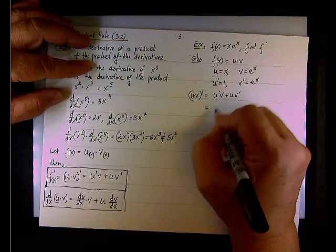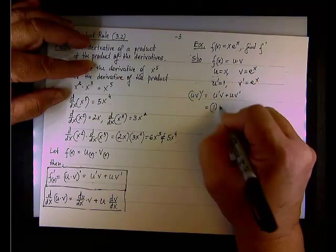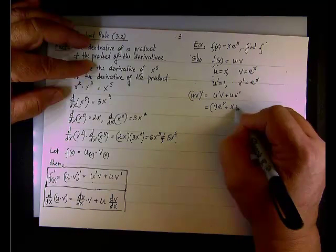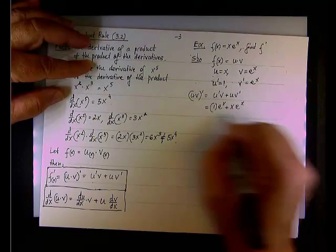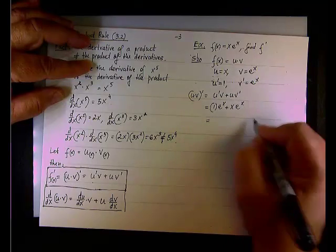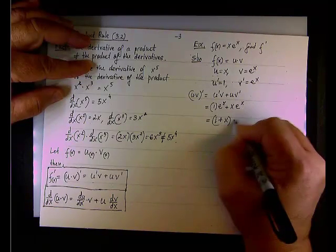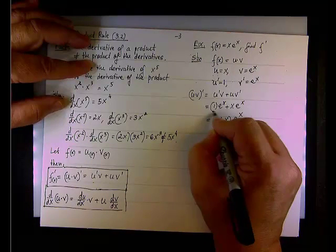Okay? Now, place everything. So, it would be 1, which is u prime, times v, which is e to the x, plus u, which is x, times v prime, which is e to the x. And factor out e to the x. And I like to keep e to the x at the end. And this is it.